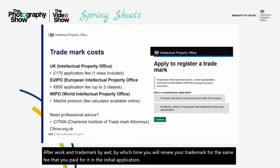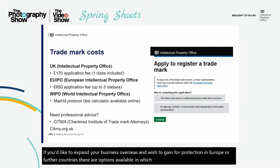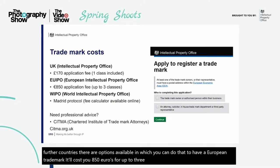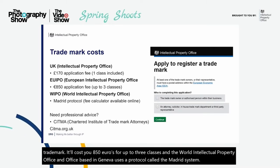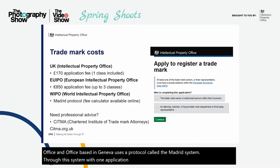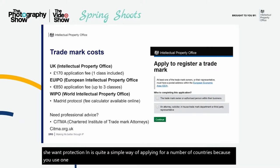If you'd like to expand your business overseas and gain protection in Europe or further countries, there are options available. To have a European trademark, it will cost you €850 for up to three classes. The World Intellectual Property Office, based in Geneva, uses a protocol called the Madrid system. Through this system, with one application, you can designate a number of countries in which you want protection. It's a simple way of applying for multiple countries because you use one application in one language, so there's no need to pay for additional translations.